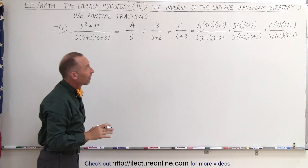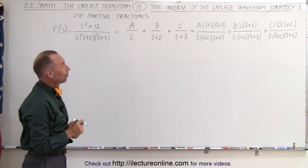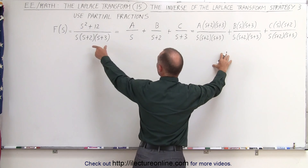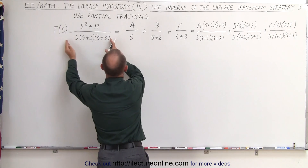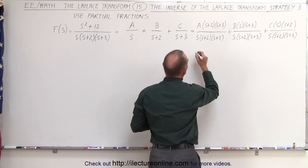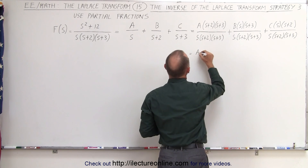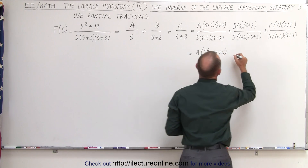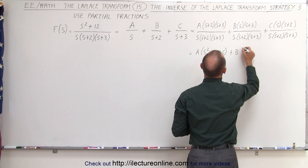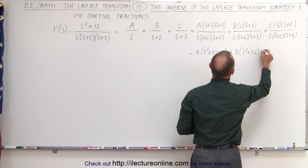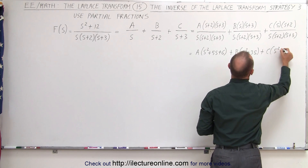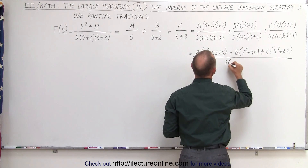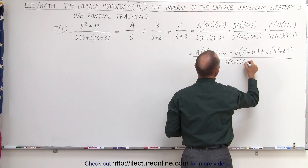Now will that allow us to find what a, b, and c are equal to? Yes. Notice when we multiply these out and write over a common denominator we'll get something that we can equate. This will be a times s squared plus 5s plus 6, plus b times s squared plus 3s, plus c times s squared plus 2s, all over the common denominator of s times s plus 2 times s plus 3.